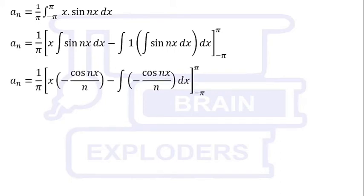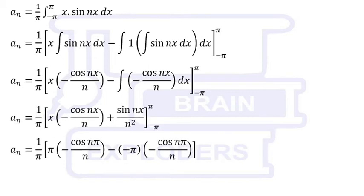So aₙ can be written as 1/π times x·sin(nx) minus integration of 1 times integration of sin(nx), limit -π to +π. On solving this, we get aₙ = -2/n times (-1)ⁿ.